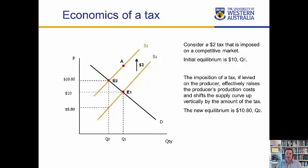What I've done in this diagram is impose a $2 per unit tax on the market. That has the effect of moving the supply curve up vertically by $2. The logic behind that is if we focus on unit Q1.